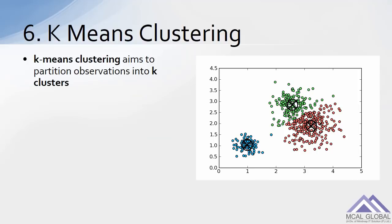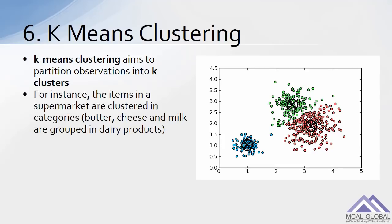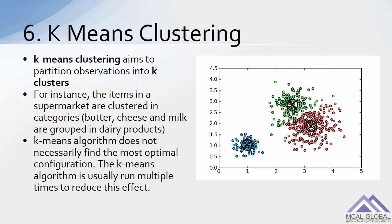Number six: K-means clustering. K-means clustering aims to partition observations into K clusters. For instance, items in a supermarket are clustered into categories — butter, cheese, and milk are grouped in dairy products. The K-means algorithm does not necessarily find the most optimal configuration, so it is usually run multiple times to reduce this effect.